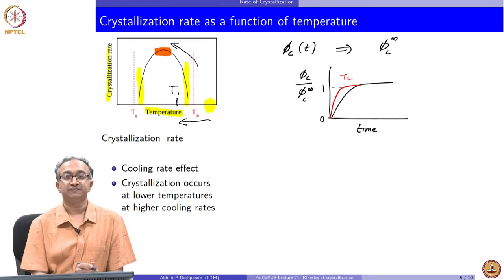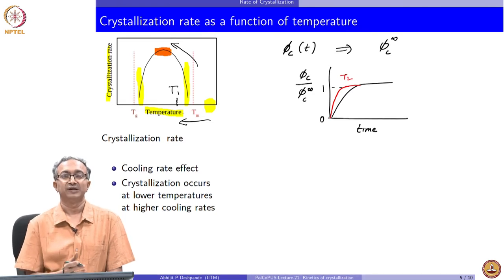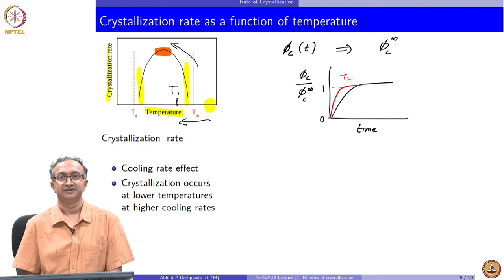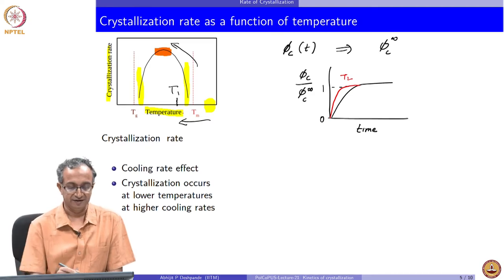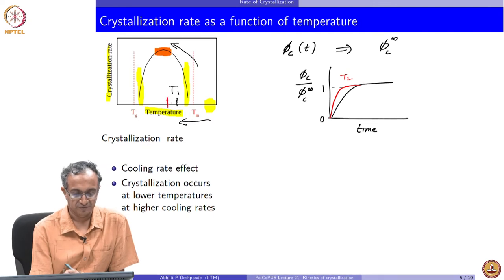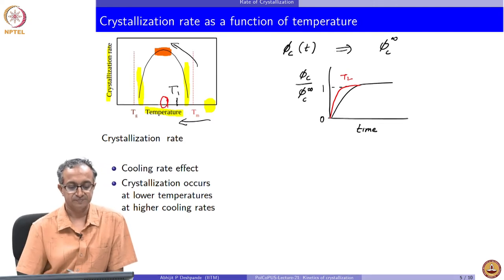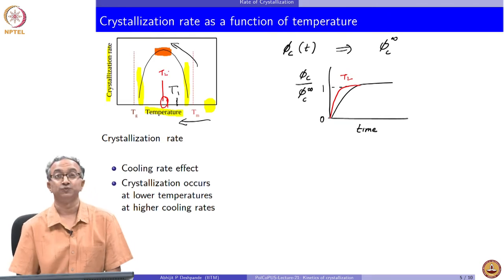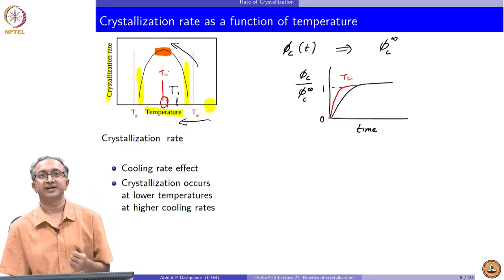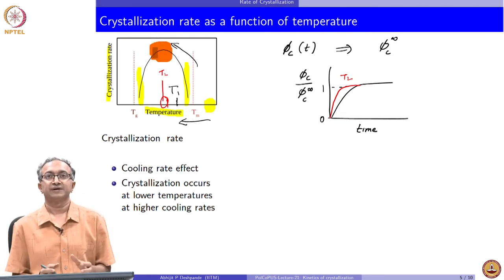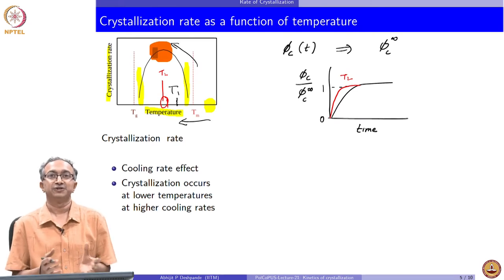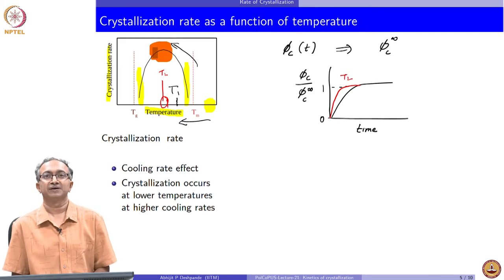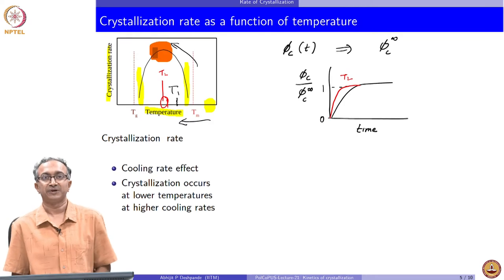If we ask where T2 will be on the temperature graph — whether lower than T1 or higher — since the rate at T2 is higher, T2 has to be somewhere in the region of higher crystallization rate. The crystallization rate is maximum at approximately (Tm + Tg) / 2, somewhere near the midpoint of the temperature range from glass transition to melting point.